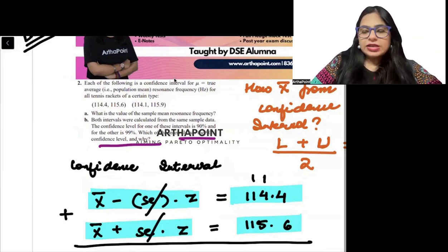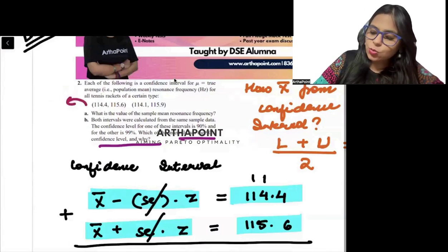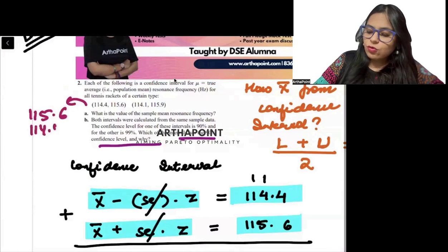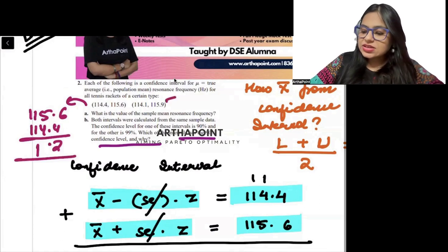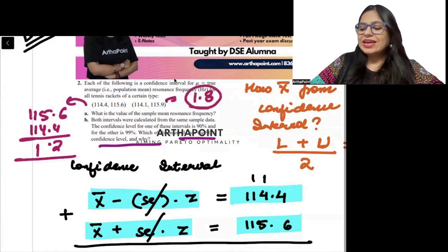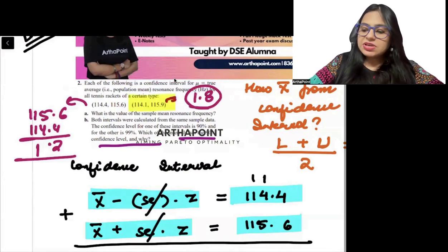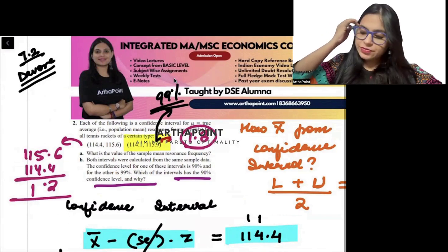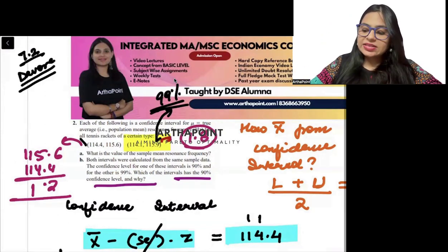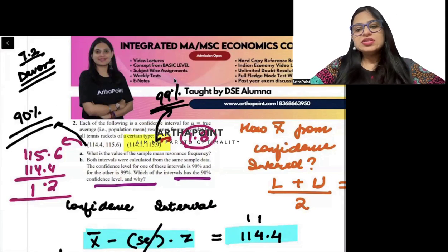So if I just go ahead and see here, here the gap is 115.6, 114.4. So this gap is of 1.2. Whereas here the gap is going to be 1.8. So the gap is much more in the second case. It means that this is representative of a 99% confidence level, right? Of a 99% confidence level. And this is the representative of a 90% confidence level.